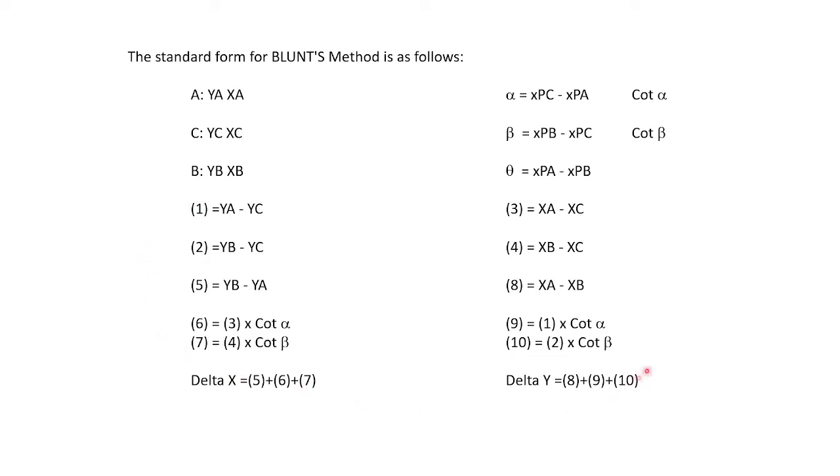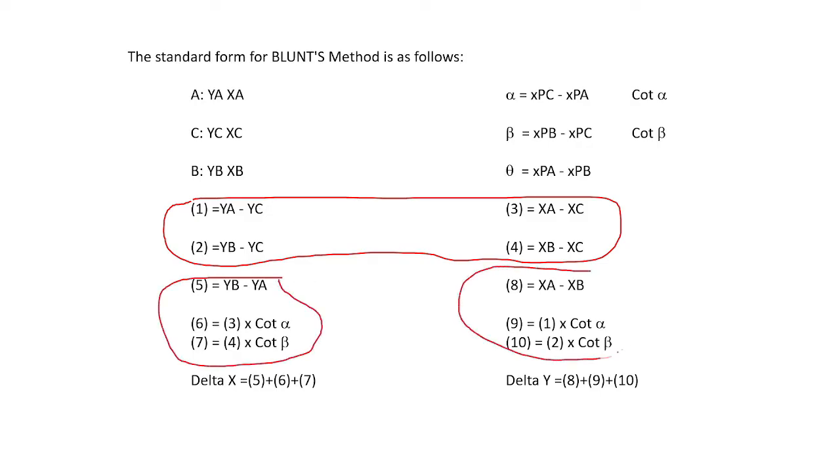Now the steps for every section are as follows. You see these numbers 1, 2, 3, 4. You do those 4 first. Then you'll do 5, 6 and 7, and then you'll do 8, 9 and 10. You'll add the answers of 5, 6 and 7 to get delta x. And you'll add the answers of 8, 9 and 10 to get delta y.